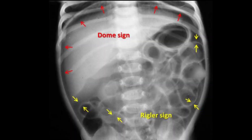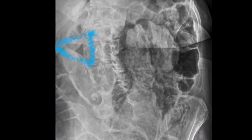There are bowel-related signs on abdominal radiograph indicating pneumoperitoneum. One is called the Rigler sign, also known as the double wall sign — red and yellow arrows indicate a double wall appearance. There is also the telltale sign, indicated by the blue lines surrounding a region, which is also a confirmatory sign for pneumoperitoneum.